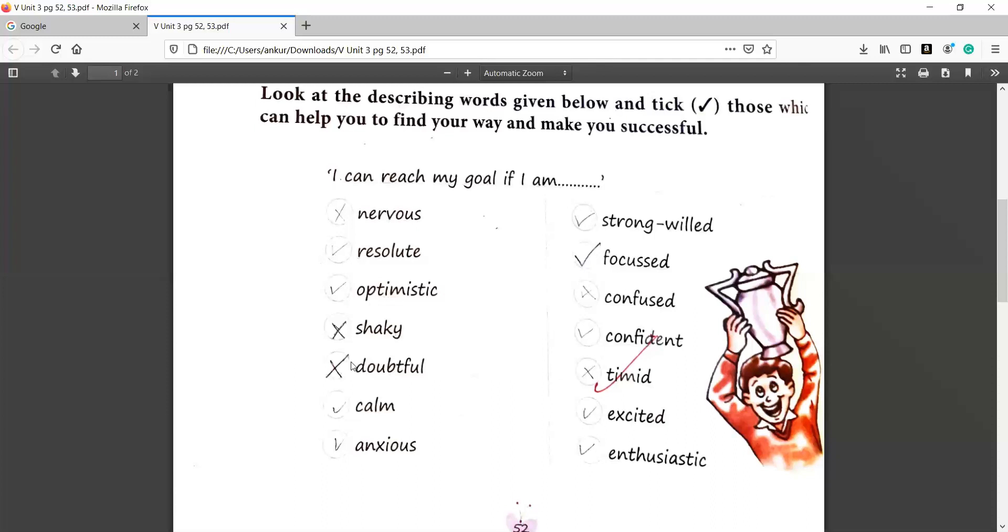Resolute means that you are firmly resolved to do something. Optimistic means that you are full of positivity. You are thinking about doing something, yes, you should do something. Or it will be good. Shakey means that you are not rigid on your own decisions. You have doubted yourself.